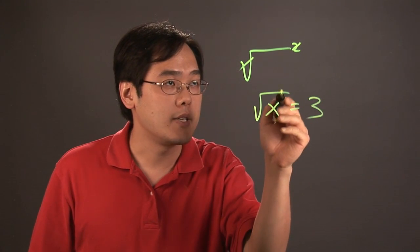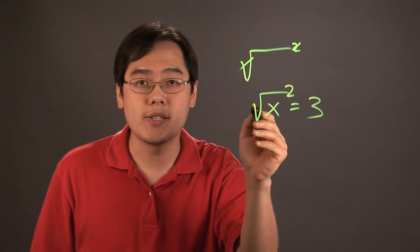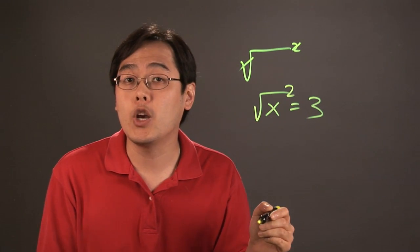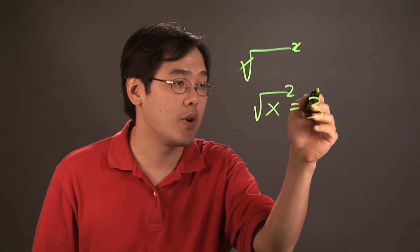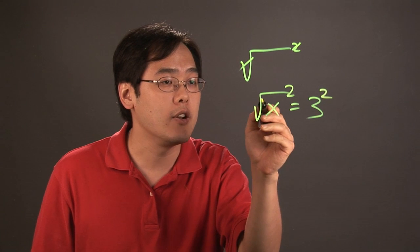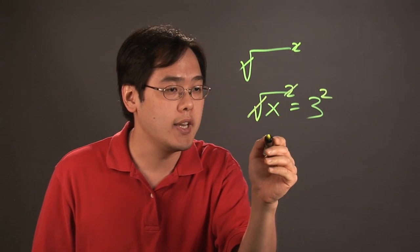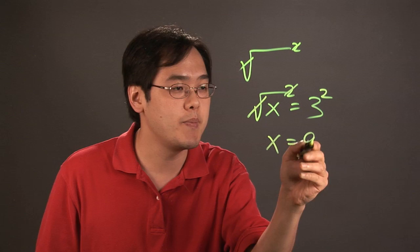To get rid of the square root, like I said before, you want to square this side. But as you know, in any equation, to square one side, you have to square the other side as well. So what will happen here is that the square root and square are gone. You have x is equal to 3 squared, which is going to be 9.